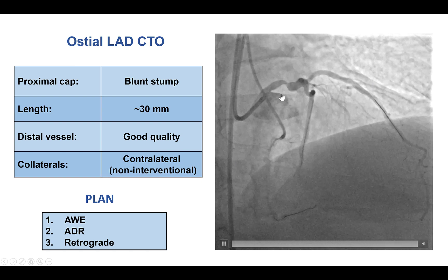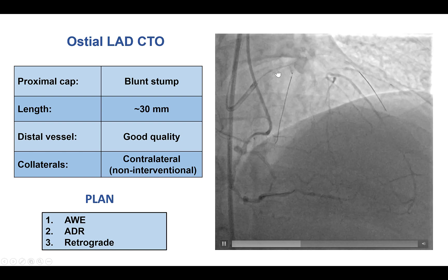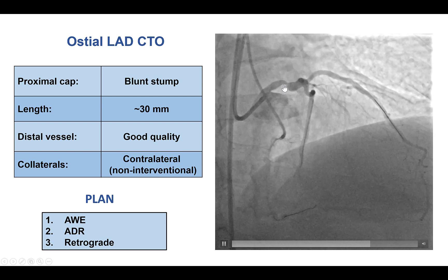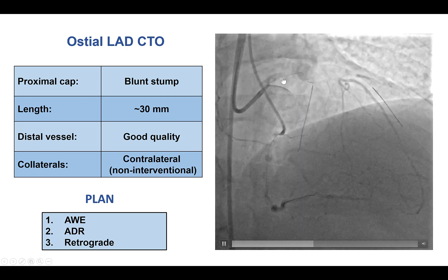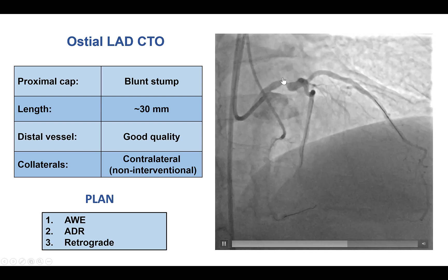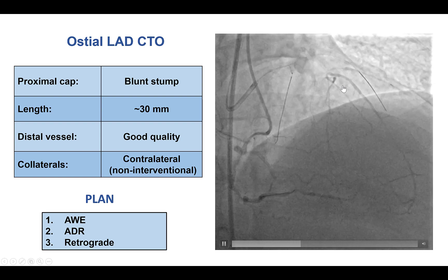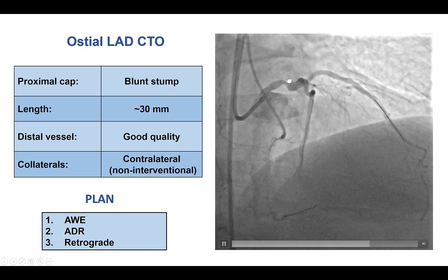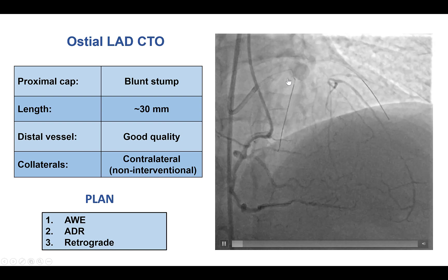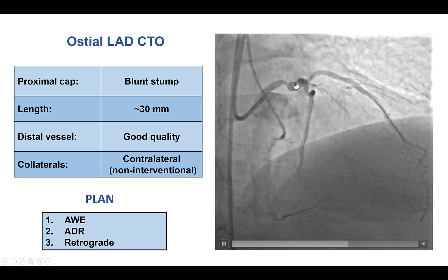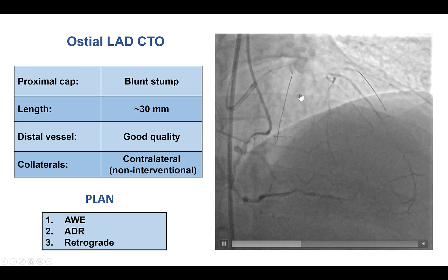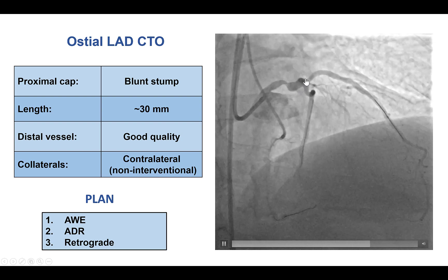Our plan was to not treat the left main first, because subsequent equipment advancement might lead to stent deformation. Instead, we would try to treat the LAD first and then stent the left main at the end of the procedure. Our plan was to use IVUS and different projections to understand the proximal cap ambiguity.